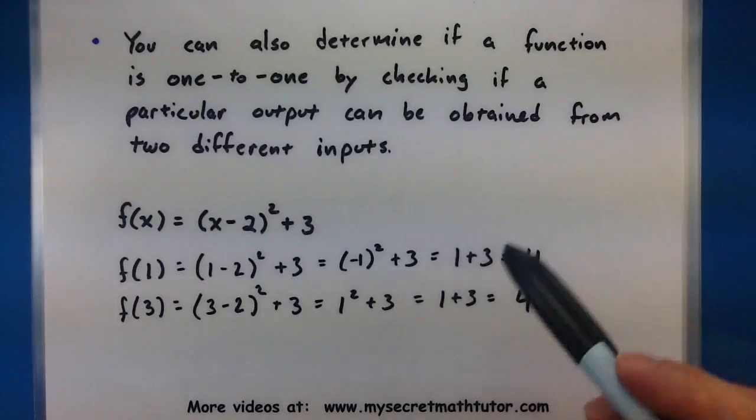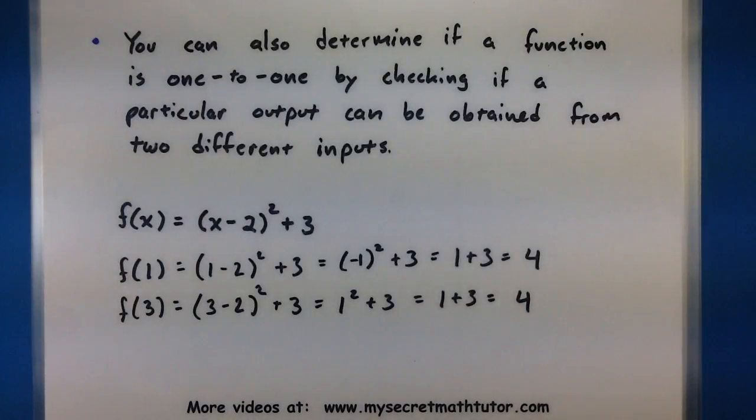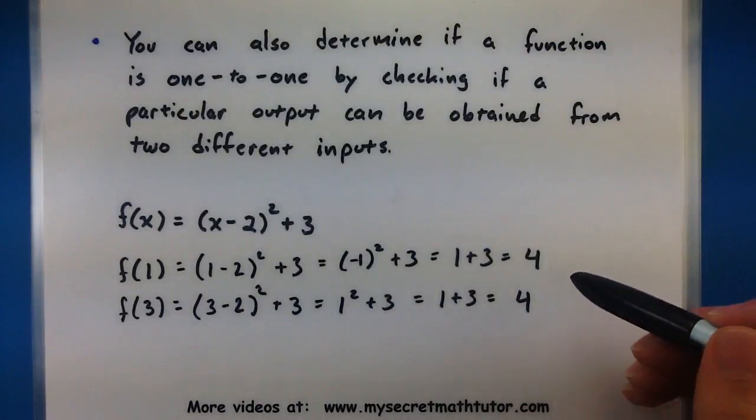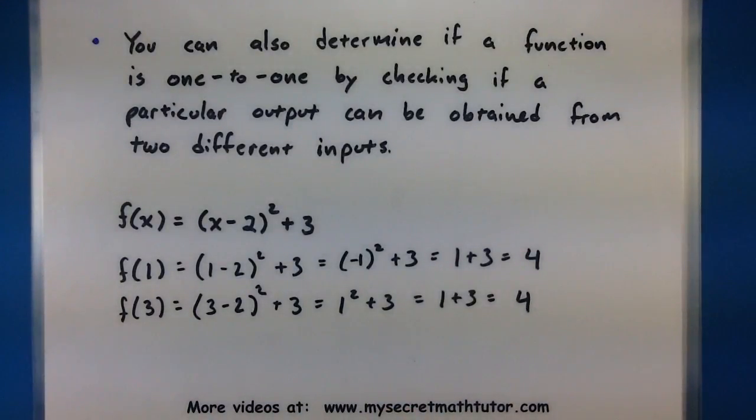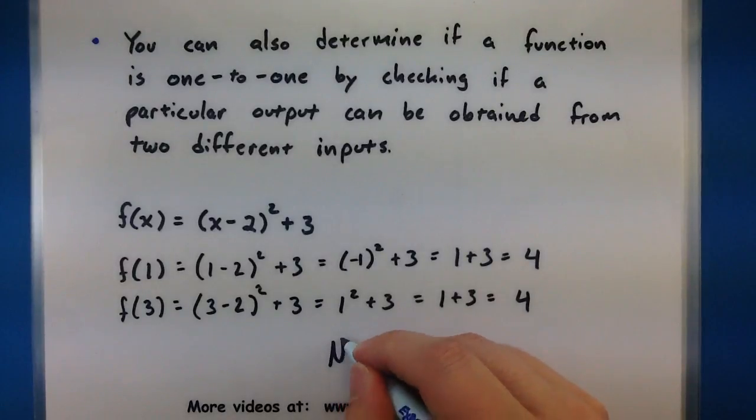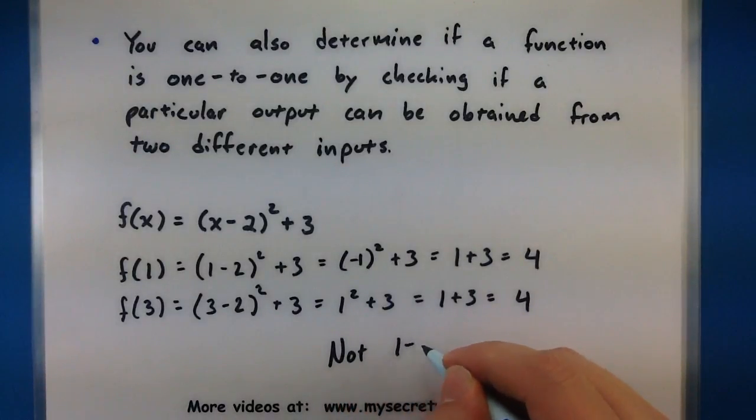So this is the problem that we're looking to avoid with one to one functions. I have one particular output but two different inputs go to the same spot. So we say this is not one to one.